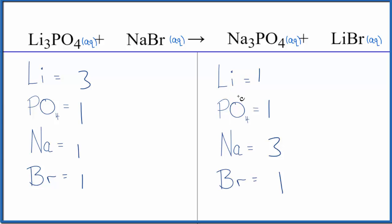Let's start by balancing the lithiums. We put a three as our coefficient here. One times three, those are balanced. One times three for the bromine gives us three of those. Then we put a three as our coefficient in front of the NaBr.